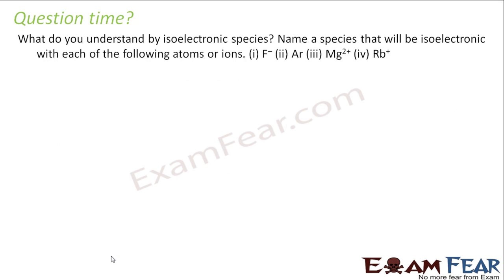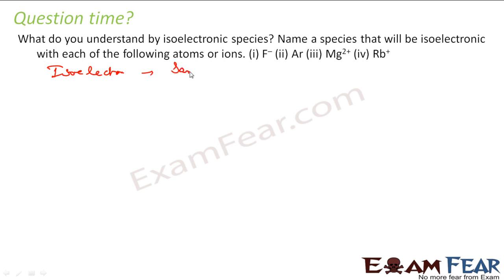What do you understand by isoelectronic species? Name species that will be isoelectronic with these ions. Isoelectronic species is something which has the same number of electrons. The name is isoelectronic — that is, same electrons.